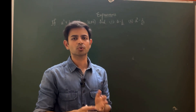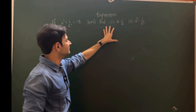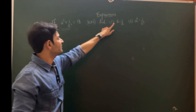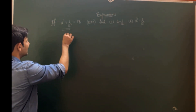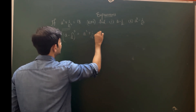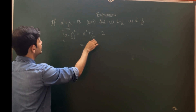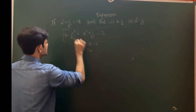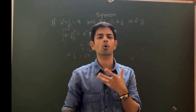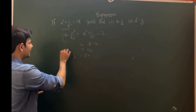Here is an important exam-type question: given a² + 1/a² = 18 and a ≠ 0, find a - 1/a and a³ - 1/a³. For the first part, apply the formula (a - 1/a)² = a² + 1/a² - 2 = 18 - 2 = 16. Taking the square root on both sides, a - 1/a = ±4. The plus or minus is important because both (+4)² and (-4)² equal 16.